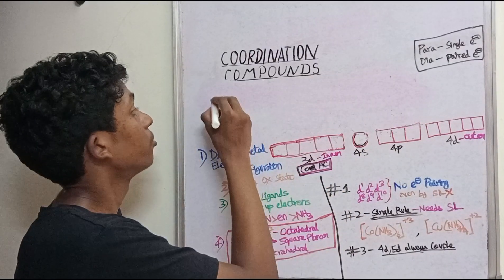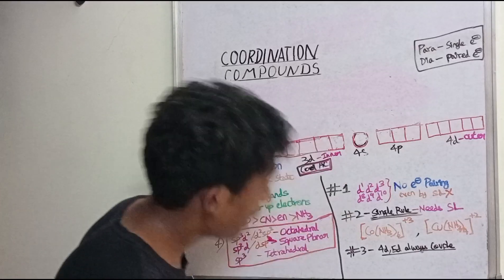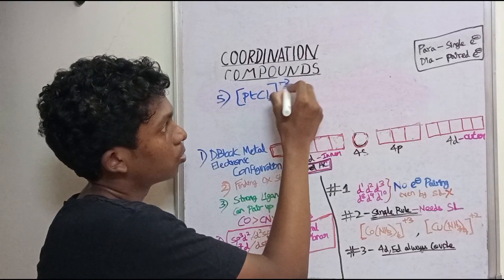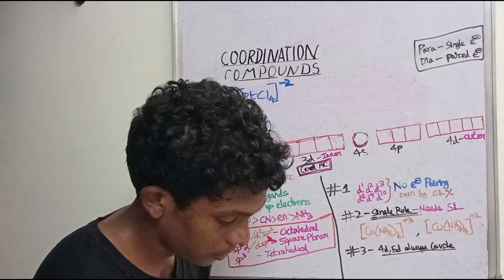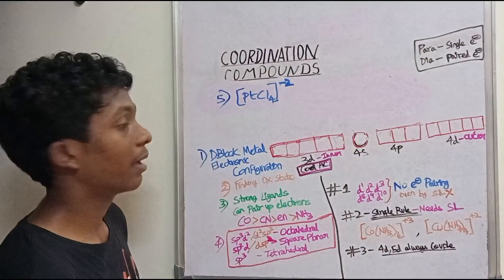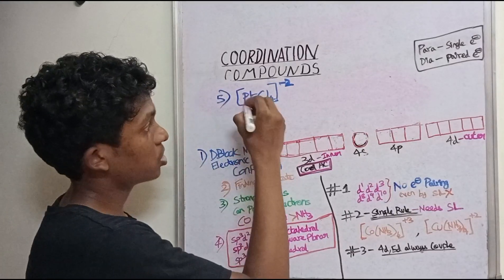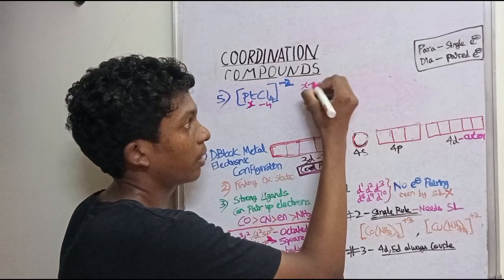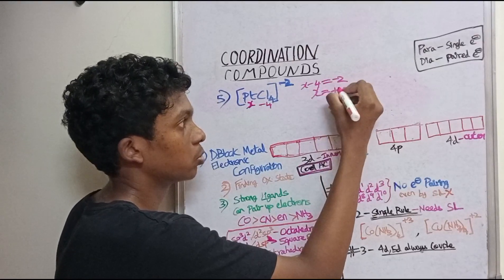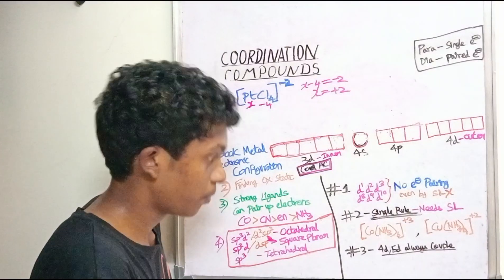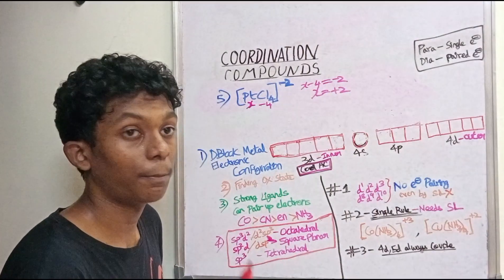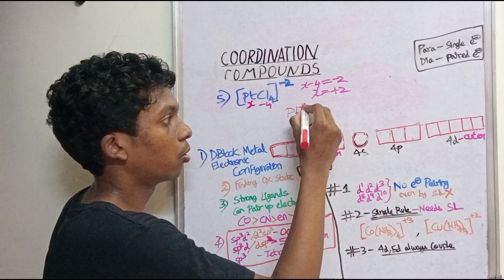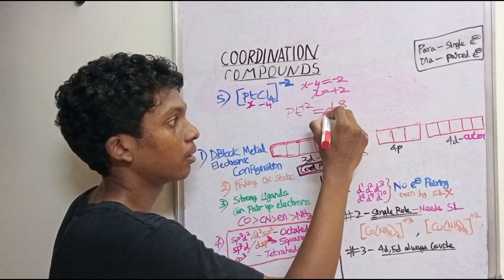The fifth and last example of the video is [PtCl₄]²⁻. Let's solve this. The oxidation state: Cl has a charge of minus 1, and there are 4 chlorines, so minus 4. The complex charge is minus 2. So x minus 4 equals minus 2, giving x equals plus 2. Platinum is Pt²⁺.